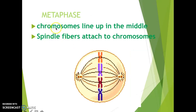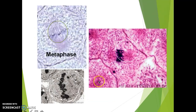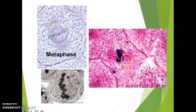The second phase is metaphase. This is when the chromosomes line up in the middle of the cell. By now the nucleus is gone, and the spindle fibers from the centrioles attach to the centromere of these chromosomes. In microscope images you can see the chromosomes lining up in the middle of the cell — the dark spots are the spindle fibers, and the darker ones are the actual chromosomes.